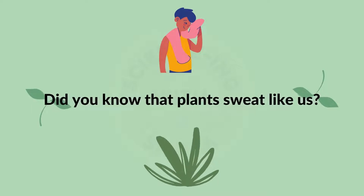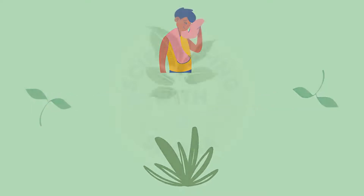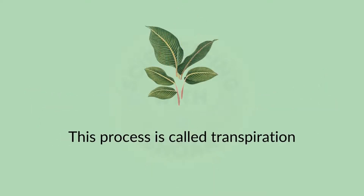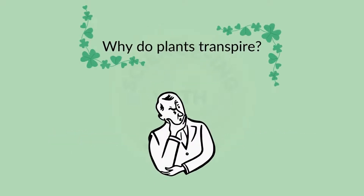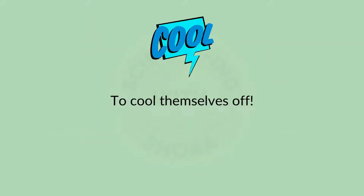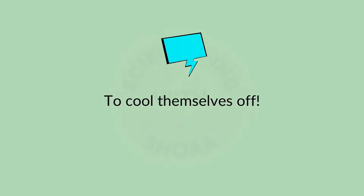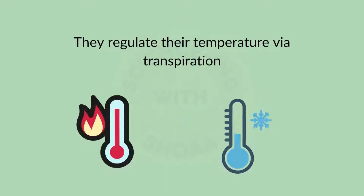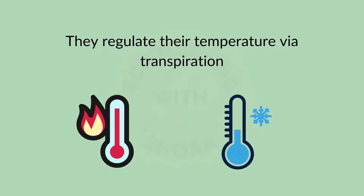Did you know that plants also sweat like us? This process is called transpiration. But why do plants transpire? For the same reasons we sweat — to cool themselves off. They regulate their temperature via transpiration.